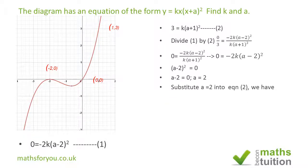If we now substitute a equals two into equation two, we end up with three equals k into three squared, because two plus one is three. That becomes k times nine, and k then becomes three over nine. When you simplify, k is one over three.